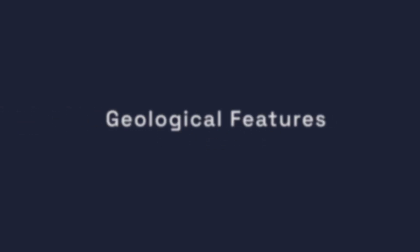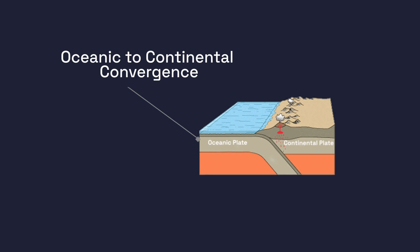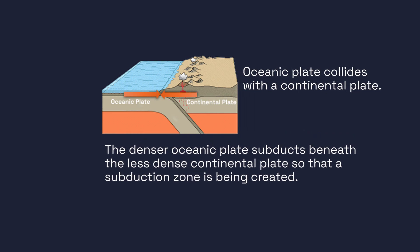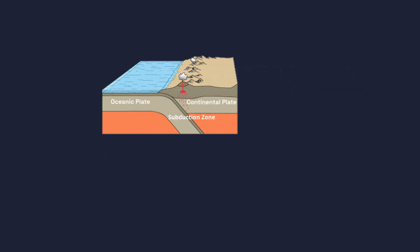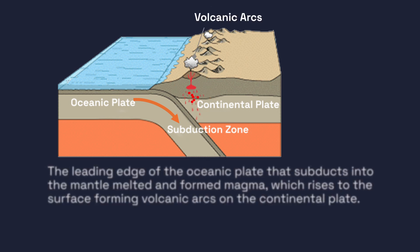The first convergent plate boundary is oceanic-to-continental convergence. This occurs when an oceanic plate collides with a continental plate. The denser oceanic plate subducts beneath the less dense continental plate, creating a subduction zone. The leading edge of the oceanic plate that subducts into the mantle melts and forms magma, which rises to the surface forming volcanic arcs on the continental plate.